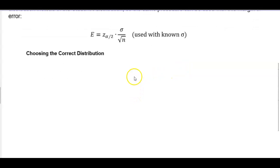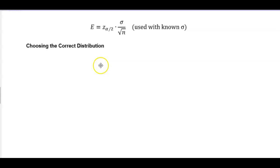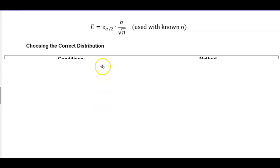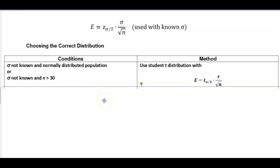Choosing the correct distribution. If the population standard deviation is not known and the population is normally distributed, or the population standard deviation is not known and n is greater than 30,